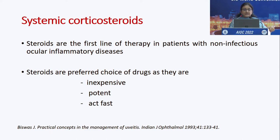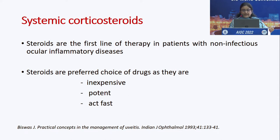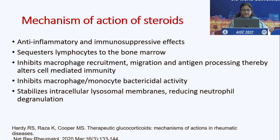The most important systemic medication for uveitis is systemic corticosteroids — the first line of therapy in patients with non-infectious ocular inflammatory diseases. They are inexpensive, potent, and act very fast. Corticosteroids bind to glucocorticoid receptors in the cytoplasm, bringing about a change in cellular response and controlling inflammation. They sequester lymphocytes to bone marrow, inhibit cell responses, stabilize intracellular lysosomal membranes, and reduce neutrophil degranulation.